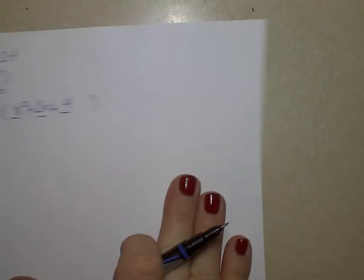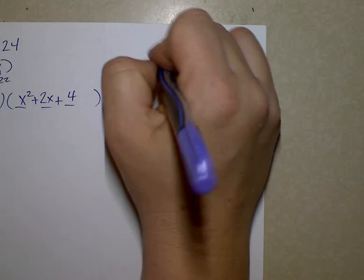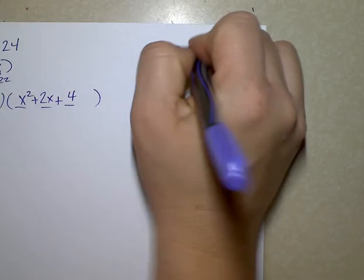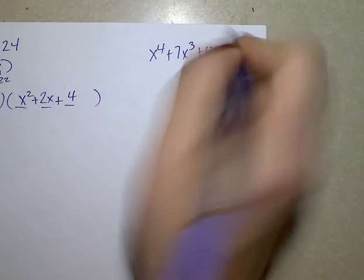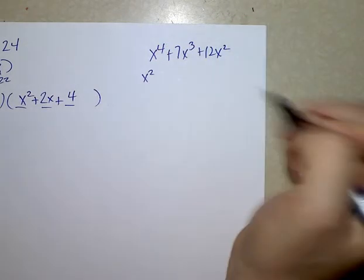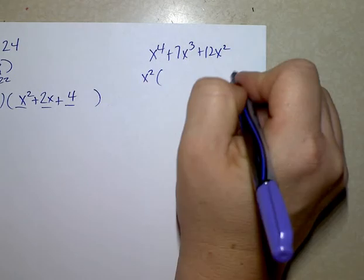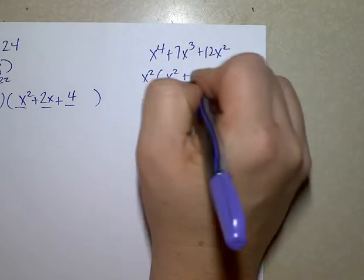The second problem is x to the 4th plus 7x cubed plus 12x squared. I can take out a maximum of x squared and once I factor that out, I'll be left with x squared plus 7x plus 12.